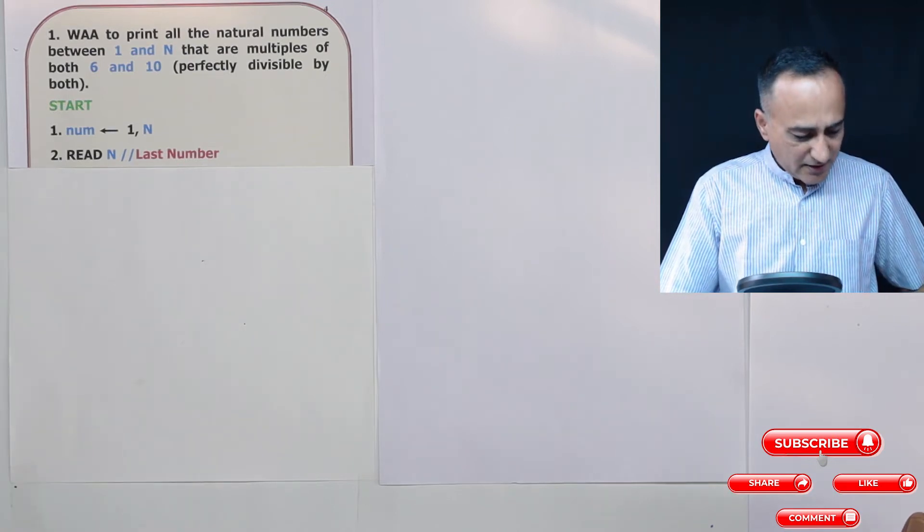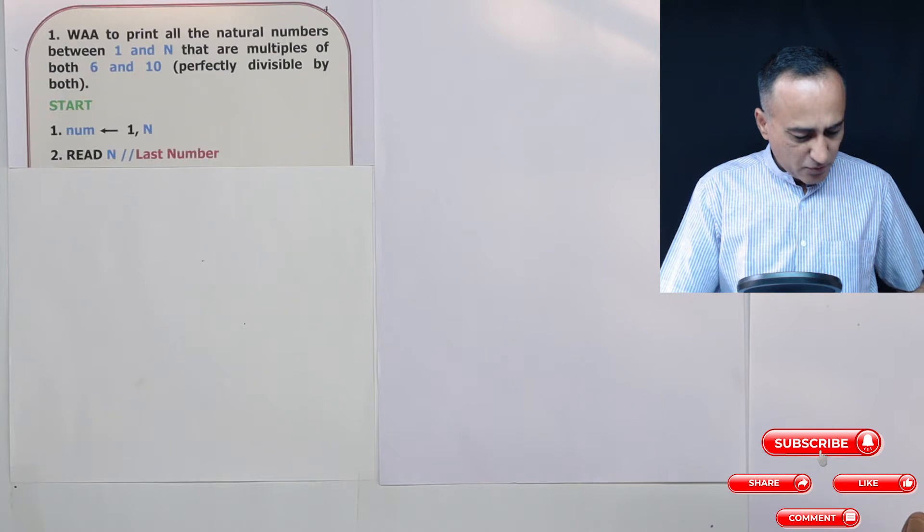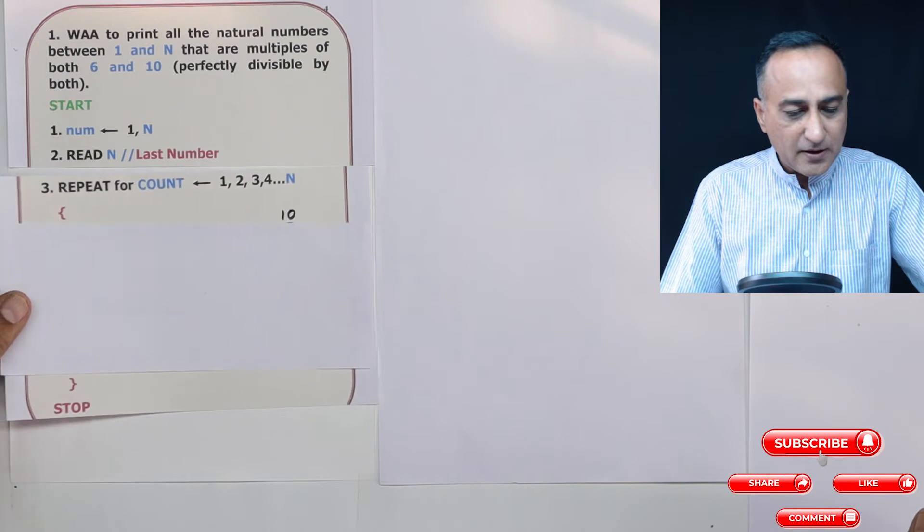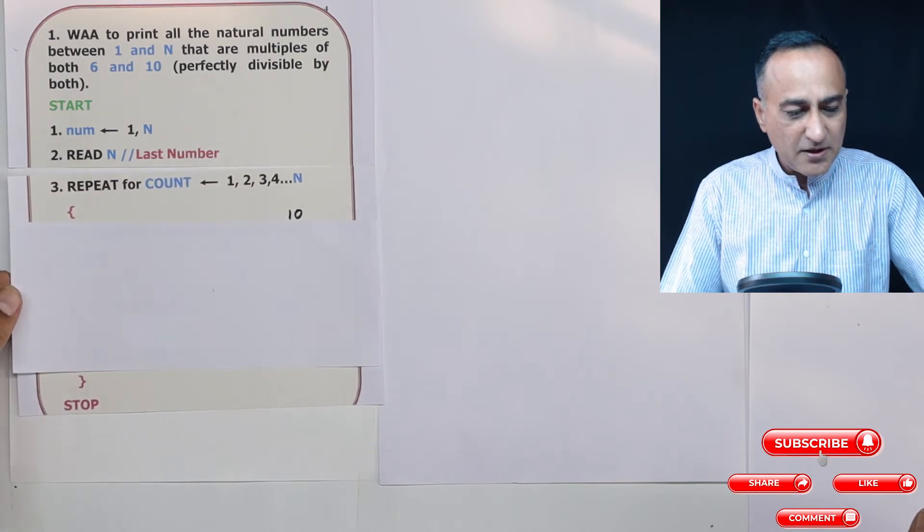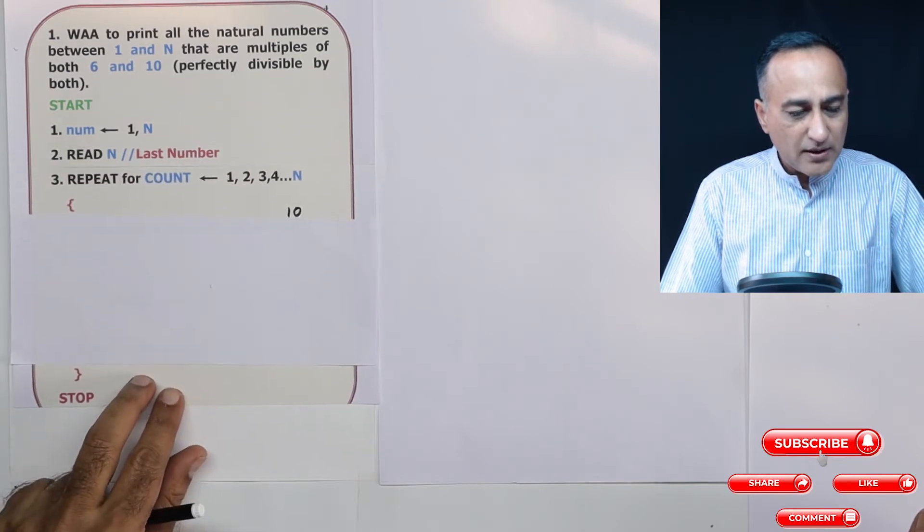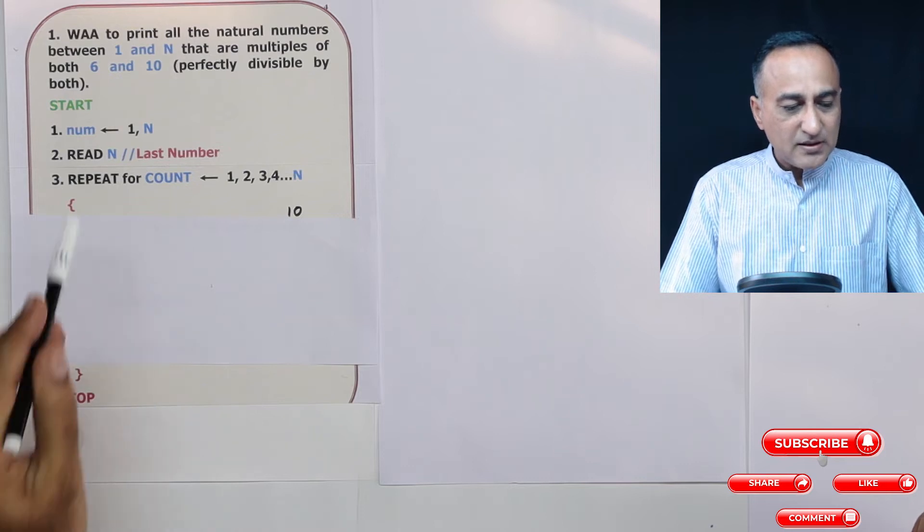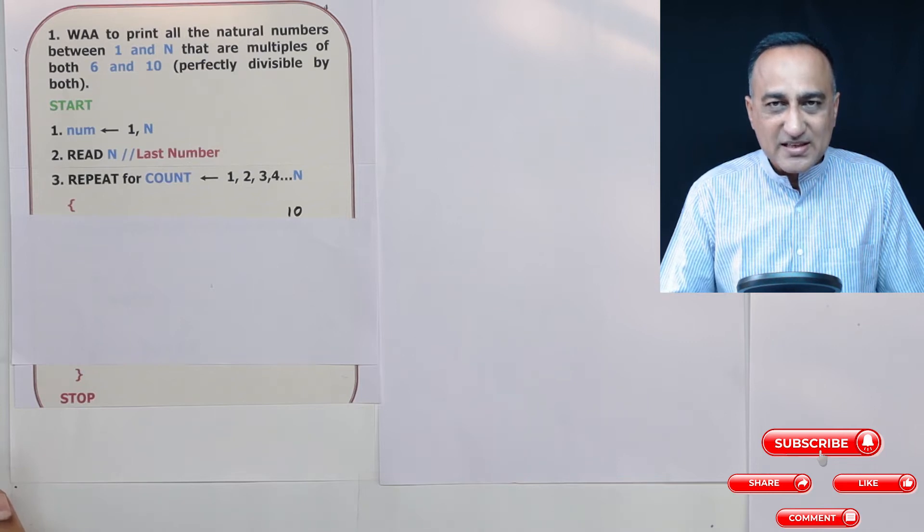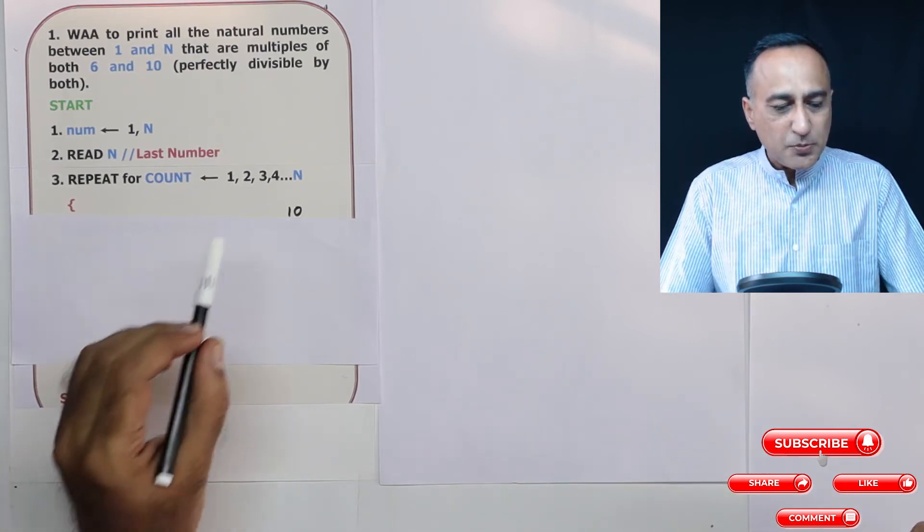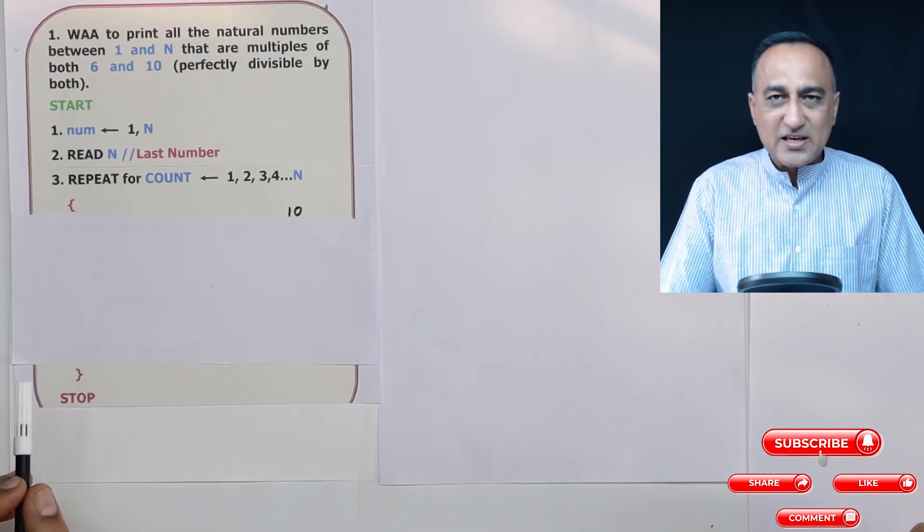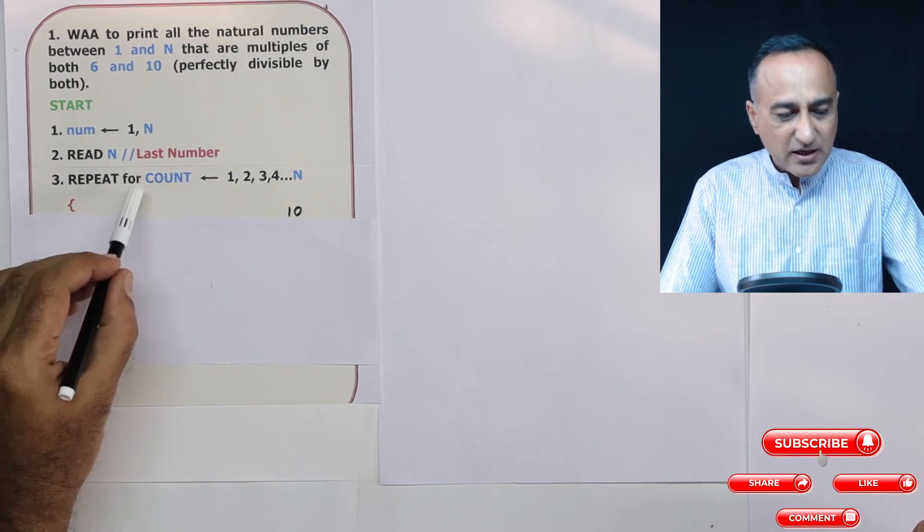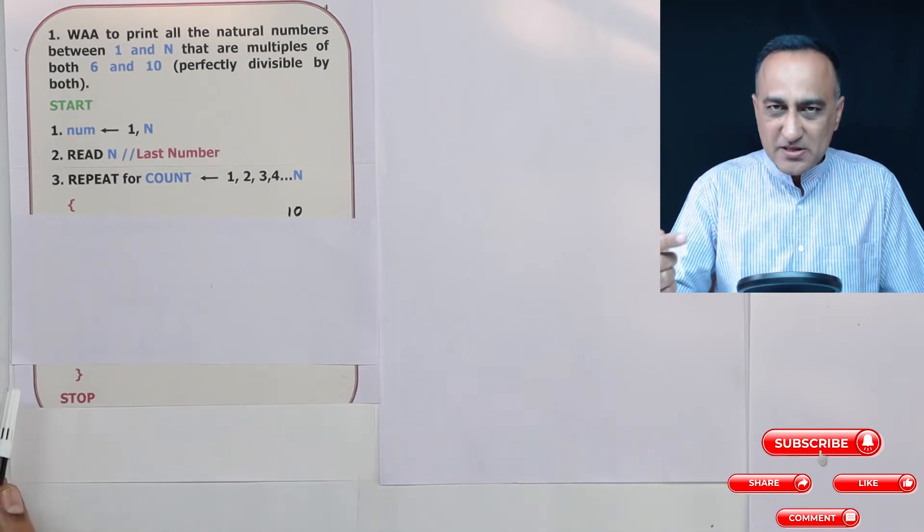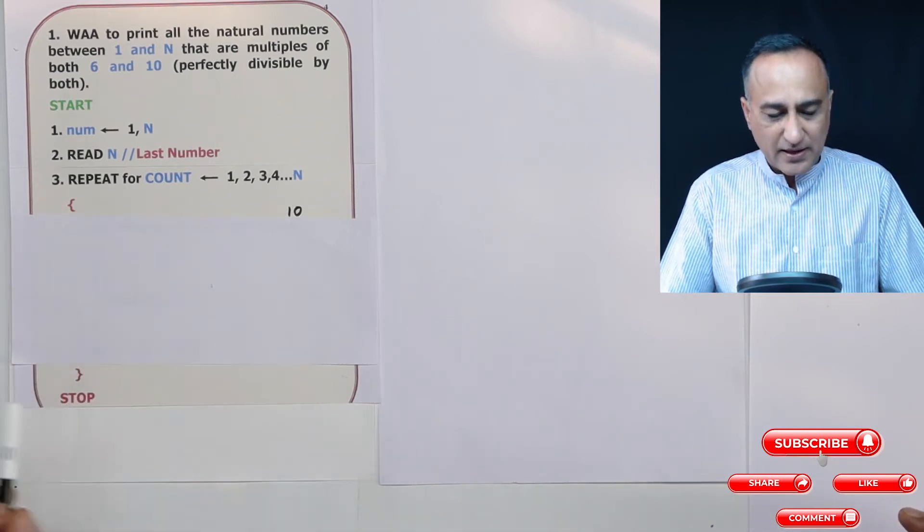The next part of the logic is: how many times do I want to repeat testing whether a number is divisible by both 6 and 10? Suppose I enter n as 50, that means this repeat for count will execute 50 times, or it will get into the body of the loop 50 times.